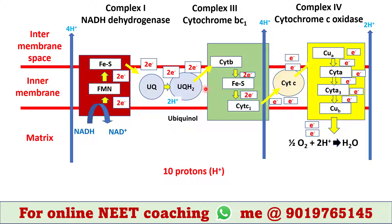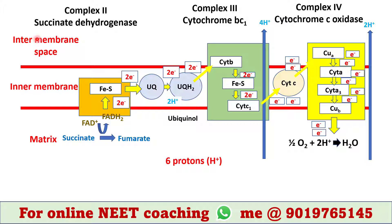In that lecture we saw that one molecule of NADH pumped 10 protons from the matrix to the intermembrane space, and one molecule of FADH2 pumped 6 protons from the matrix to the intermembrane space. Protons are translocated from the matrix to the intermembrane space, creating a concentration gradient.